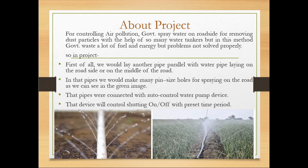Now let me tell you about the setup of the device. Firstly, we would lay another pipe parallel with the existing water pipe on either side of the road. Secondly, in those pipes, we will make many pin-size holes for spraying water on the road, as seen in the given images. Thirdly, the device will control switching on and off with a preset time period.